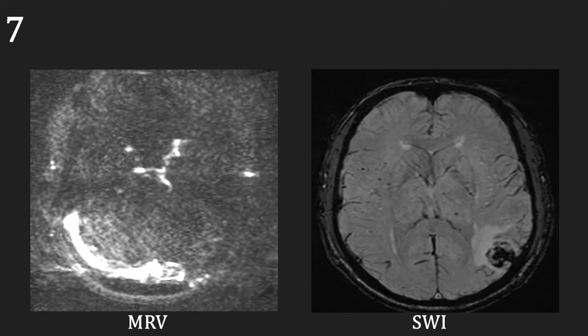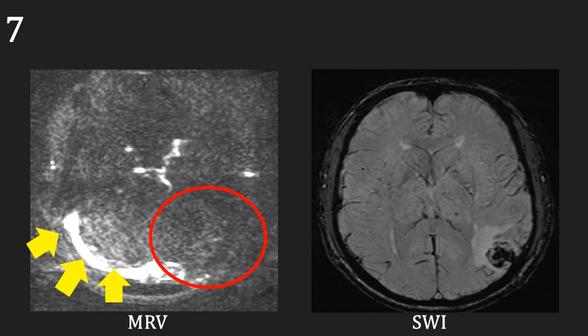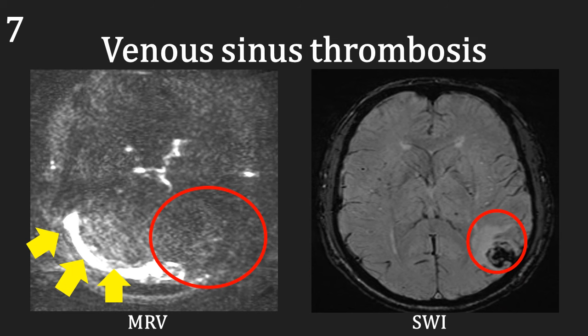Our next case is a 50-year-old male who presented with sudden onset confusion and difficulty finding the right words. On the venogram, we can see the normal right-sided transverse venous sinuses highlighted by the yellow arrows. However, this is missing on the patient's left, in keeping with venous sinus thrombosis. In addition, on the SWI sequence, we can see an area of low signal abnormality adjacent to the transverse sinus, indicating a bleed associated with this thrombus. This is a venous sinus thrombosis complicated by parenchymal haemorrhage.